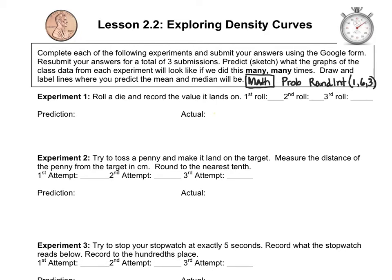Arrow over to PROB for probability and then select RANDINT. Your lower limit is going to be 1, your upper limit is going to be 6, and you want three numbers when you roll. Before you use this feature, you really should seed your calculator — that is, give it a specific location where to start generating random numbers from. When our calculators all come from the factory, they are all going to start at the same exact place with the same exact random number, and we don't want that. So look up how to seed a TI-84 calculator online. When I rolled the die, I got a 5, then a 2, then a 6.